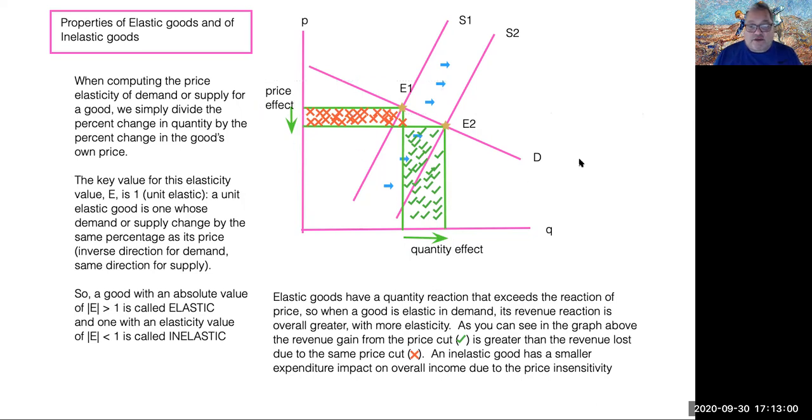You will see more revenue, meaning that a higher percentage of income is spent on elastic goods and a lower share of income is spent on inelastic goods.